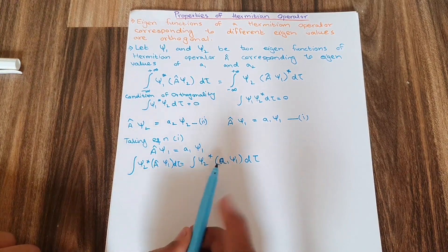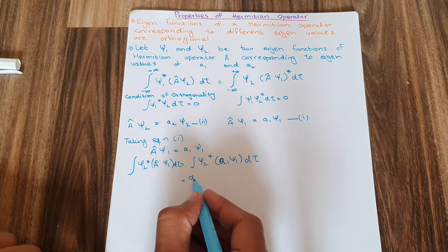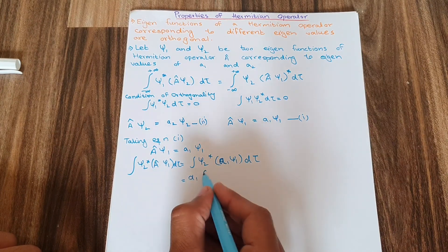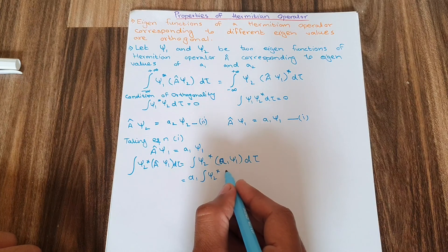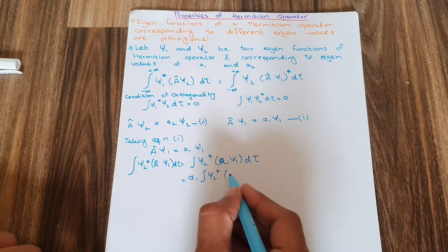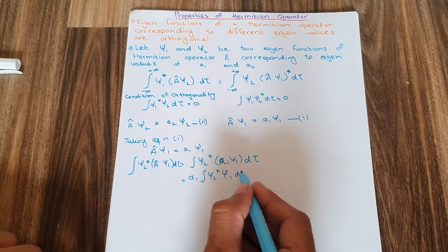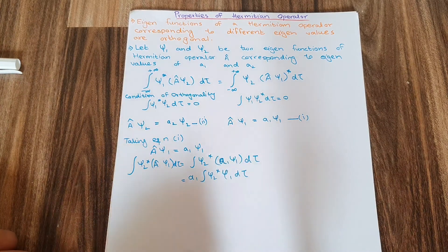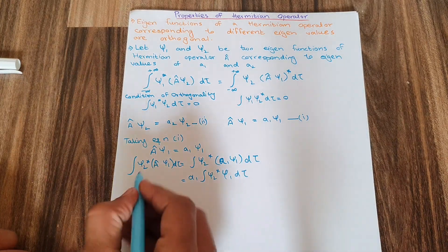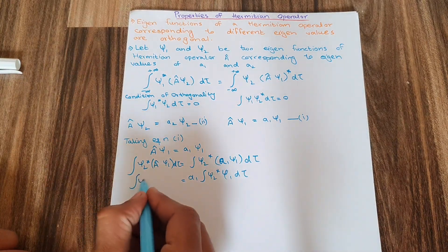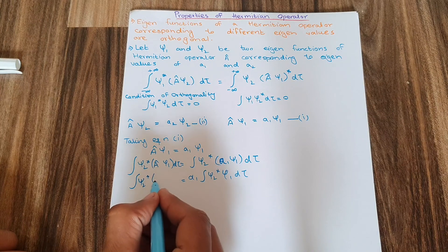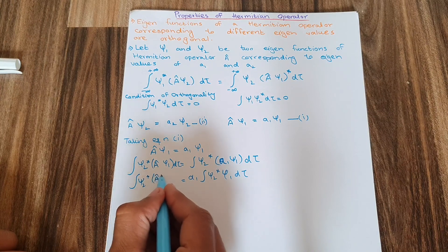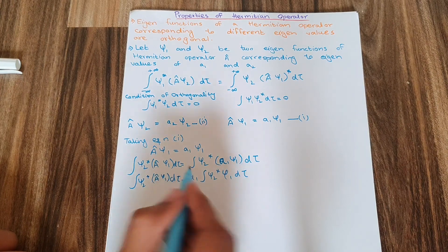Since a₁ is a constant eigenvalue, it comes out of the integration. So the right hand side becomes a₁ times the integral of ψ₂* ψ₁ dτ. The left hand side remains the integral of ψ₂* (A ψ₁) dτ — call this equation number three.